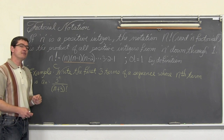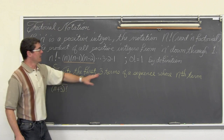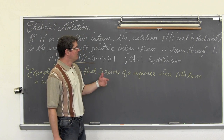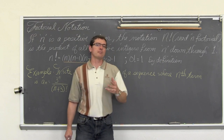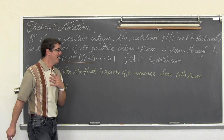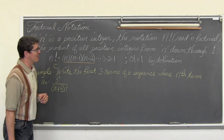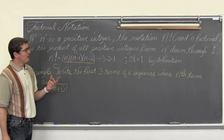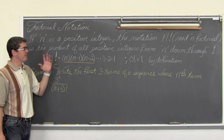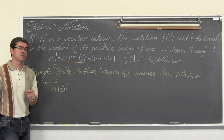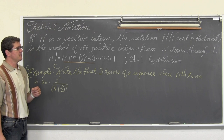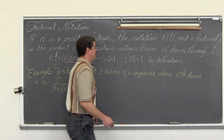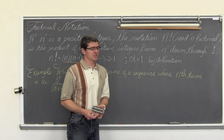Zero factorial by definition is equal to one. Don't expect some kind of great proof as to how zero factorial becomes one. But by definition for the factorial symbol, zero factorial does indeed equal one.